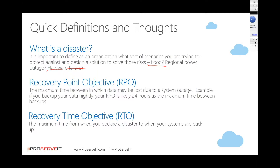Two key things to think about here. One is RPO — Recovery Point Objective. This is the amount of data you are able to lose due to a system outage. Small business customers we come across typically have a nightly tape backup. That translates to a Recovery Point Objective of 24 hours, meaning the maximum time between backups is one day, and you are at risk of losing 24 hours of data.